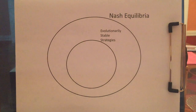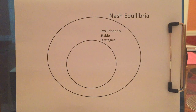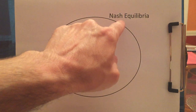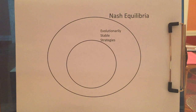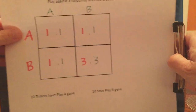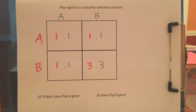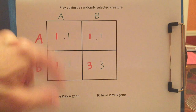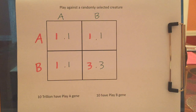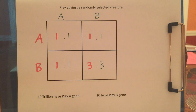Let's compare Nash Equilibria to evolutionary stability. The set of Nash Equilibria is strictly bigger than the set of evolutionarily stable strategies. If it's evolutionarily stable, it's a Nash Equilibrium, but it might be a Nash Equilibrium and not be evolutionarily stable. So let me give you an example of an outcome that is a Nash Equilibrium but is not evolutionarily stable. Everyone playing A is a Nash Equilibrium — if the other person writes down A and you write down A, you got one and you would have gotten one playing B anyway, so you don't regret it.